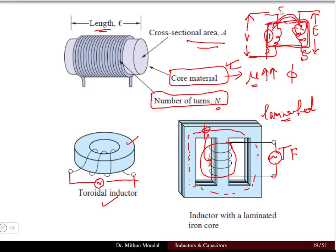The same flux links both coils. Hence, if you supply a voltage V to one coil, there will be an induced EMF in the second coil. This is known as Faraday's law of electromagnetic induction, which is the basic governing principle for the transformer.